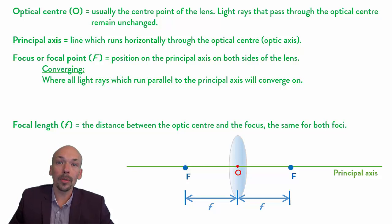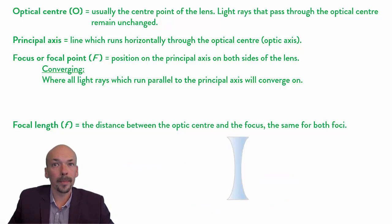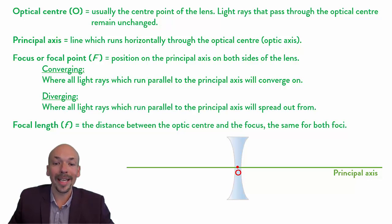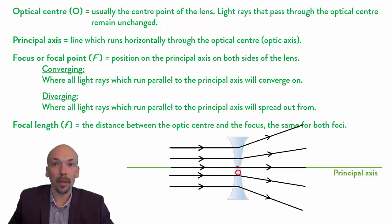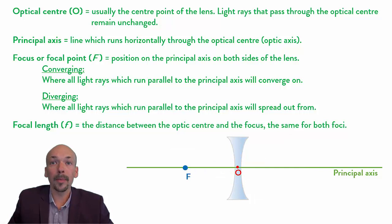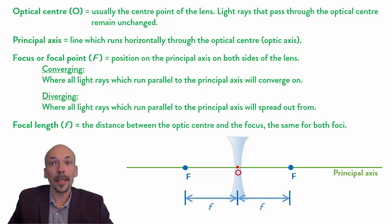Now let's determine the focus or focal point for a diverging lens. The optical center is in the middle and the principal axis goes horizontally through it. The focus can also be found where all light rays which hit parallel to the principal axis will spread out from. So if all light rays hit parallel, they will spread out from one single point — this single point is the focus or focal point. To find it, you draw straight lines back to the back of the lens, and we mark this with the capital F. On the other side of the lens, with the same distance, there is the other focus. So the focal length on the left is the same as the focal length on the right.